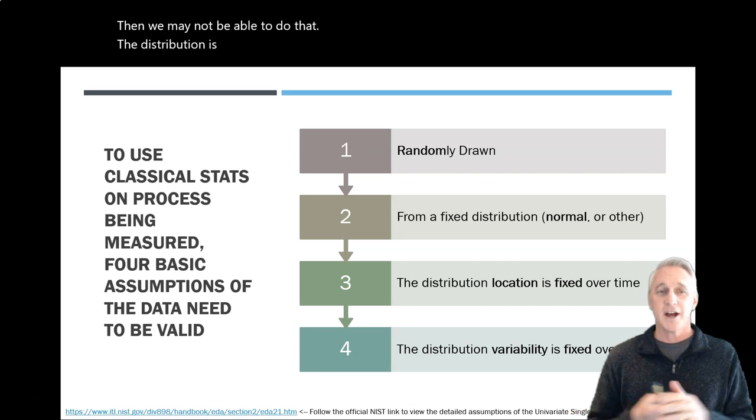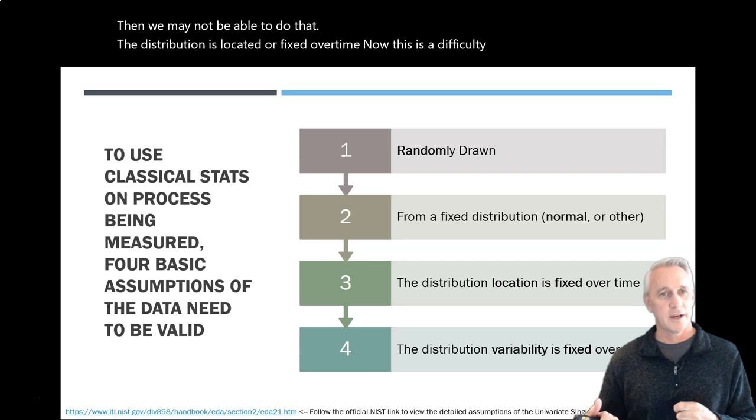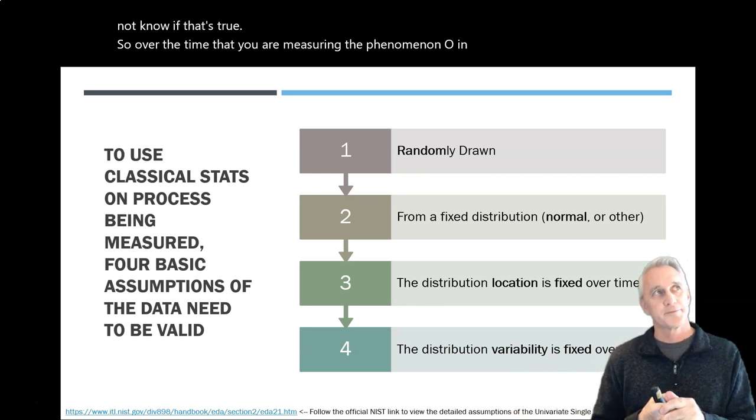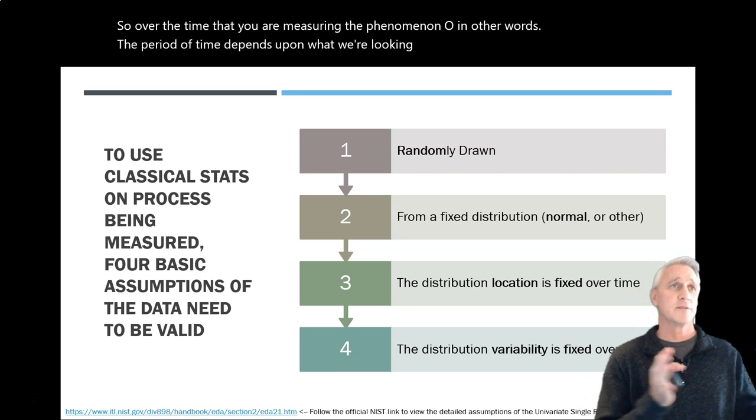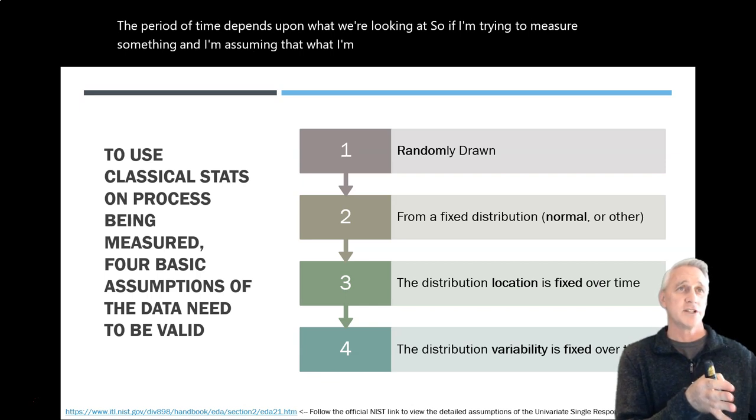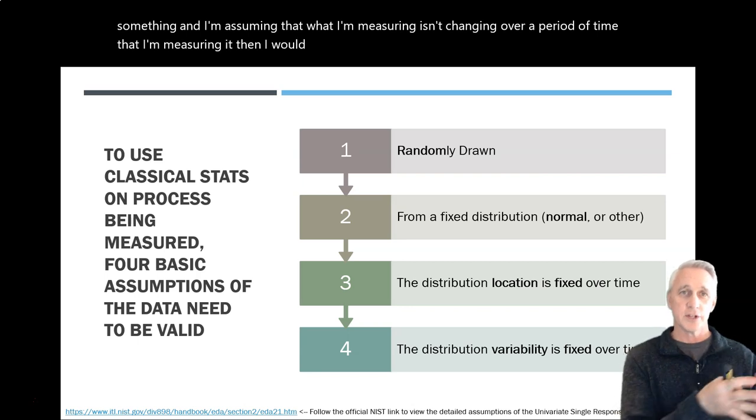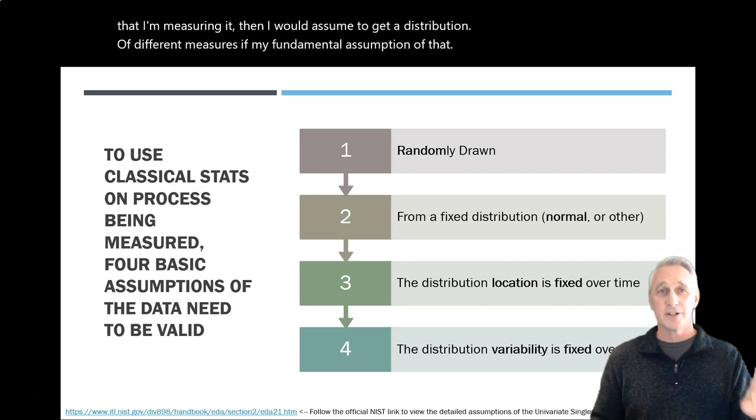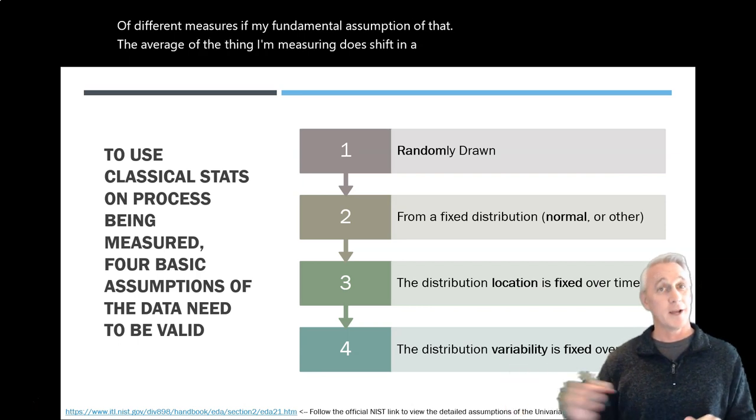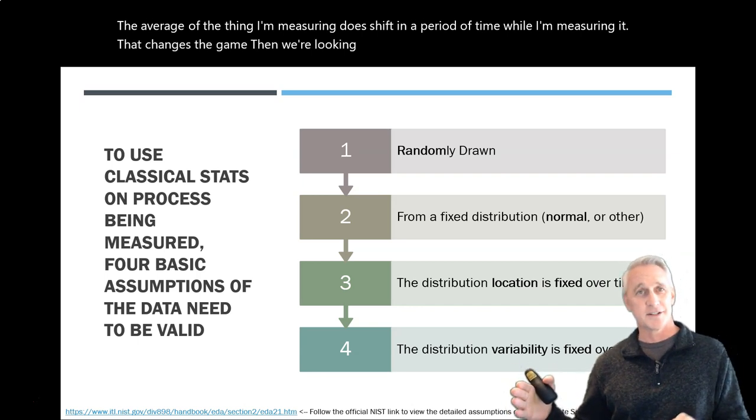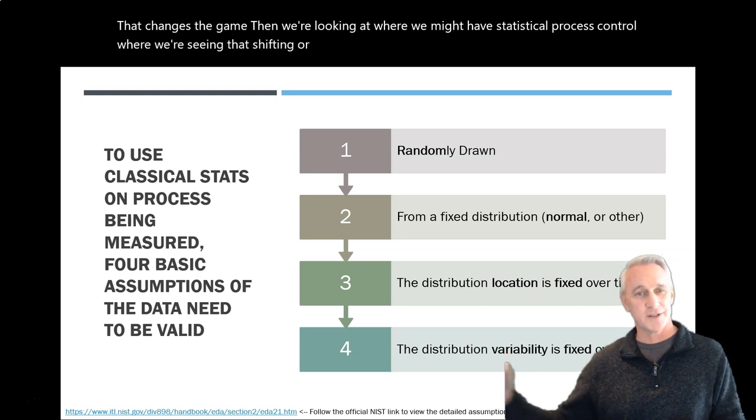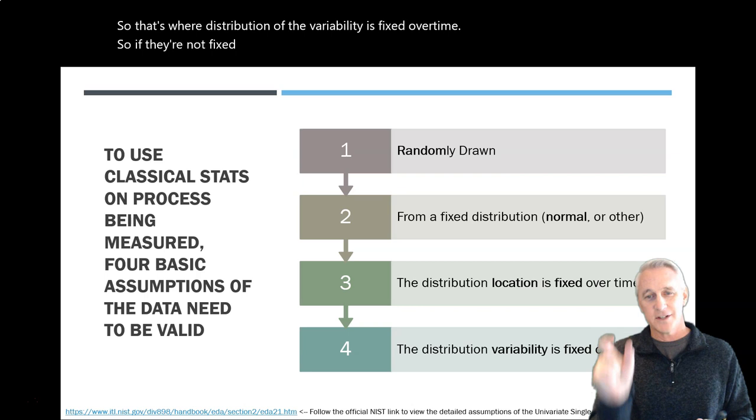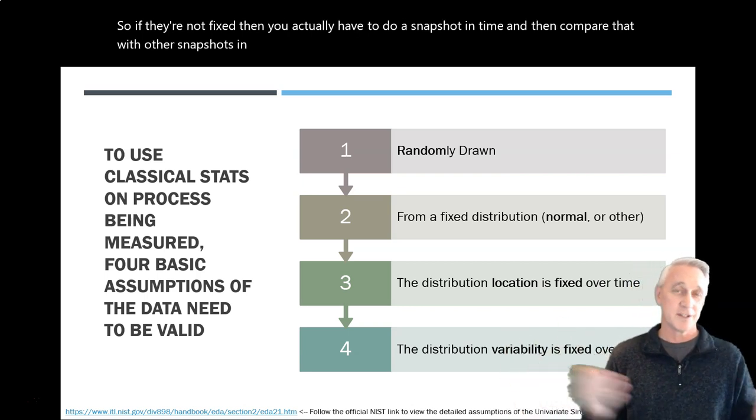So this is where exploratory data analysis comes in. It allows us to apply some tests and also plotting so we can look at the patterns of the data to make sure that we can use classical stats or not. That's really kind of the main function in our application. So a couple things we have to assume for classical stats is we are randomly drawing the data. It's from a fixed distribution. The normal distribution is what we're assuming for classical stats. Again, if it's skewed or it's a Poisson or some other form of distribution, then we may not be able to do that. The distribution is located or fixed over time. Now, this is a difficulty because you may or may not know if that's true. So over the time that you are measuring the phenomenon, the period of time depends upon what we're looking at.